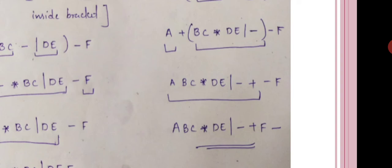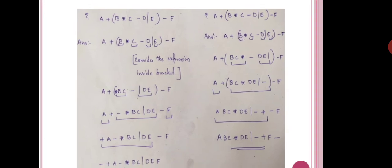For postfix conversion of the same expression, the plus operator's two operands are placed first, then the operator follows. With plus, minus, and divide, we place the operands before each operator. That concludes infix to prefix and infix to postfix conversion.